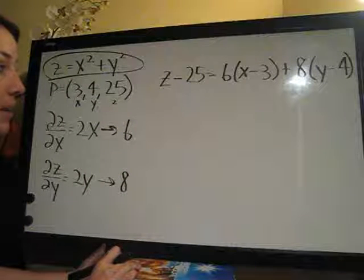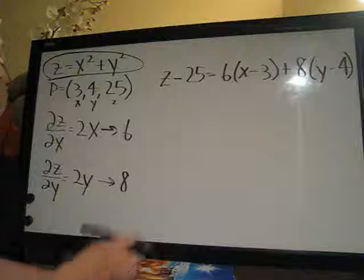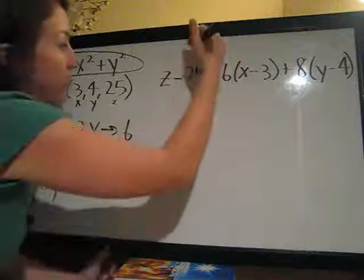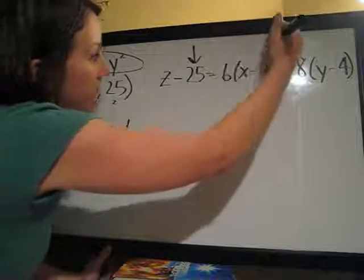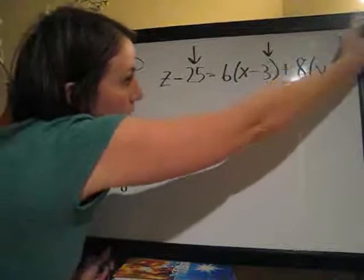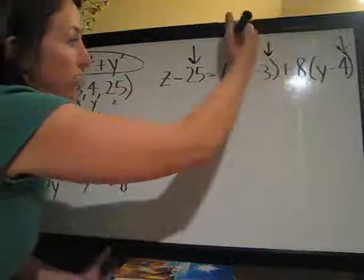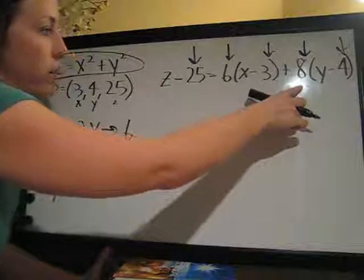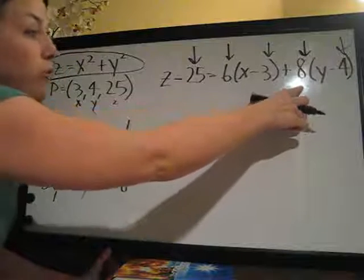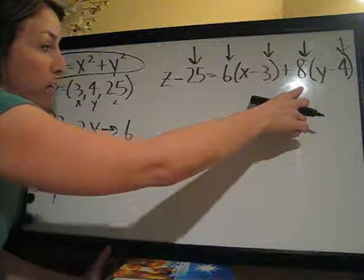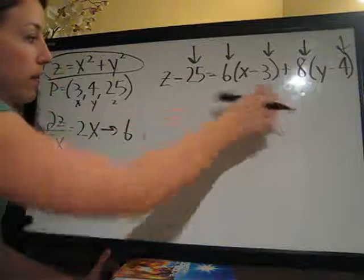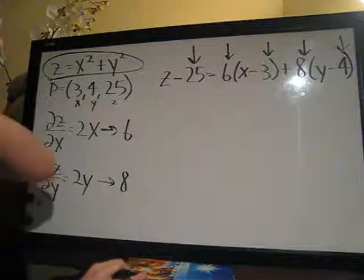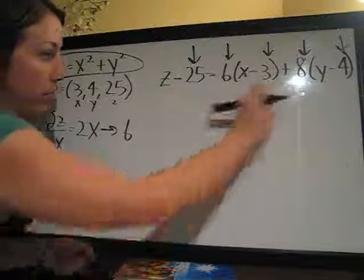So now that we've plugged everything in, and you notice before we had started, they gave us, you can see, they gave us Z, X, and Y. We solved for 6 and 8, slope in the X direction, slope in the Y direction. So those are the elements we solved for, and we write in Z, X, and Y here. So that's how we kind of break down those elements.